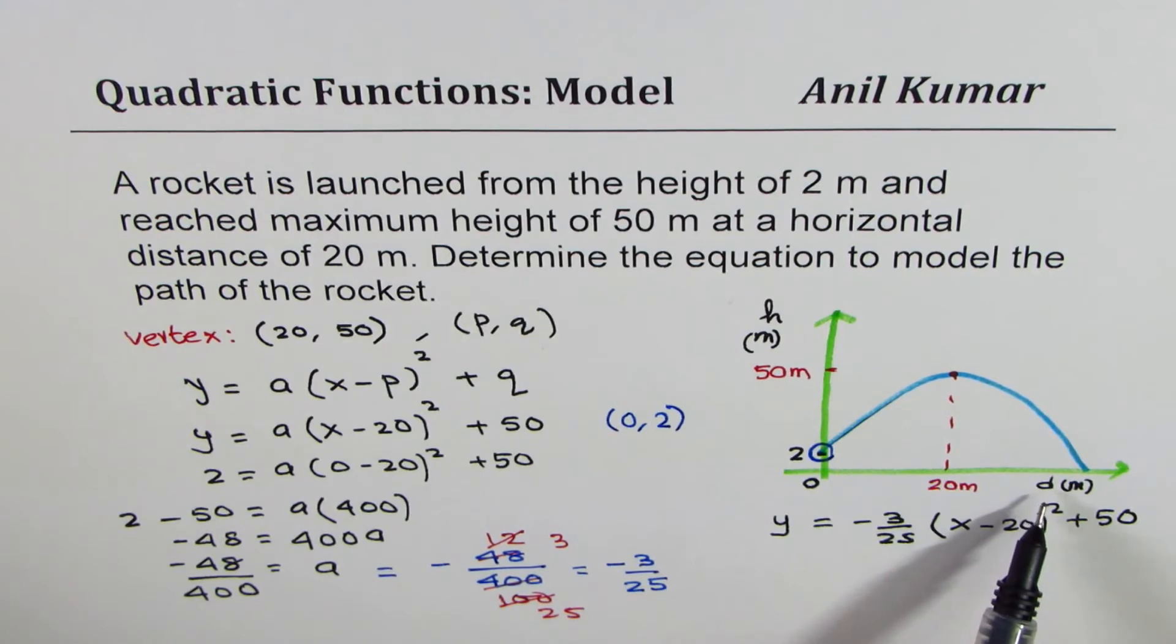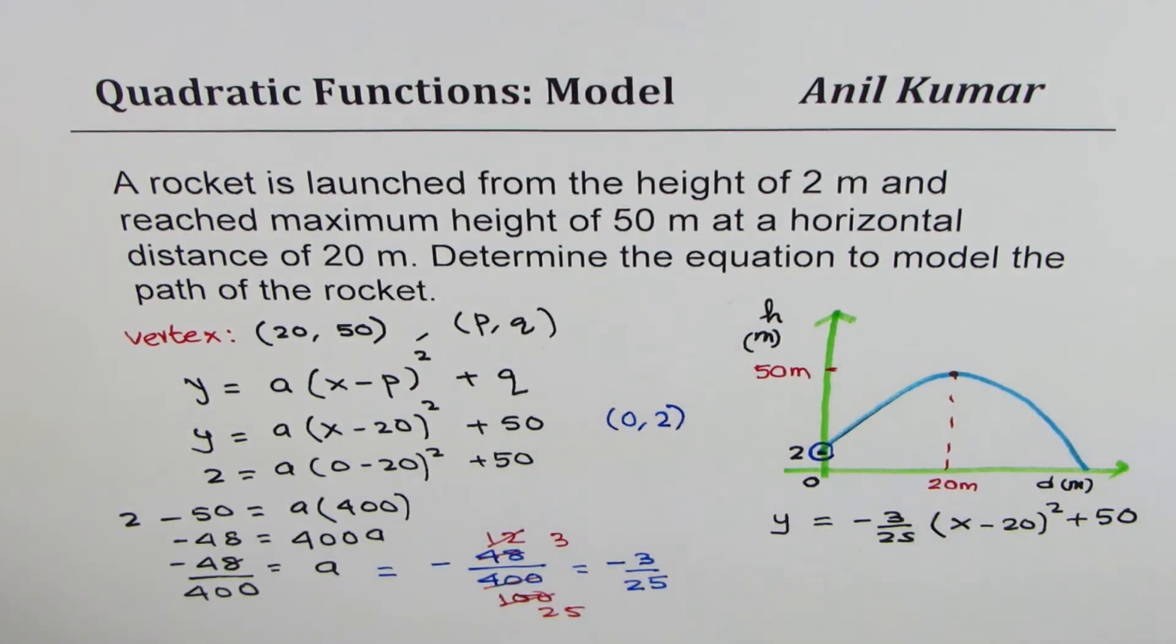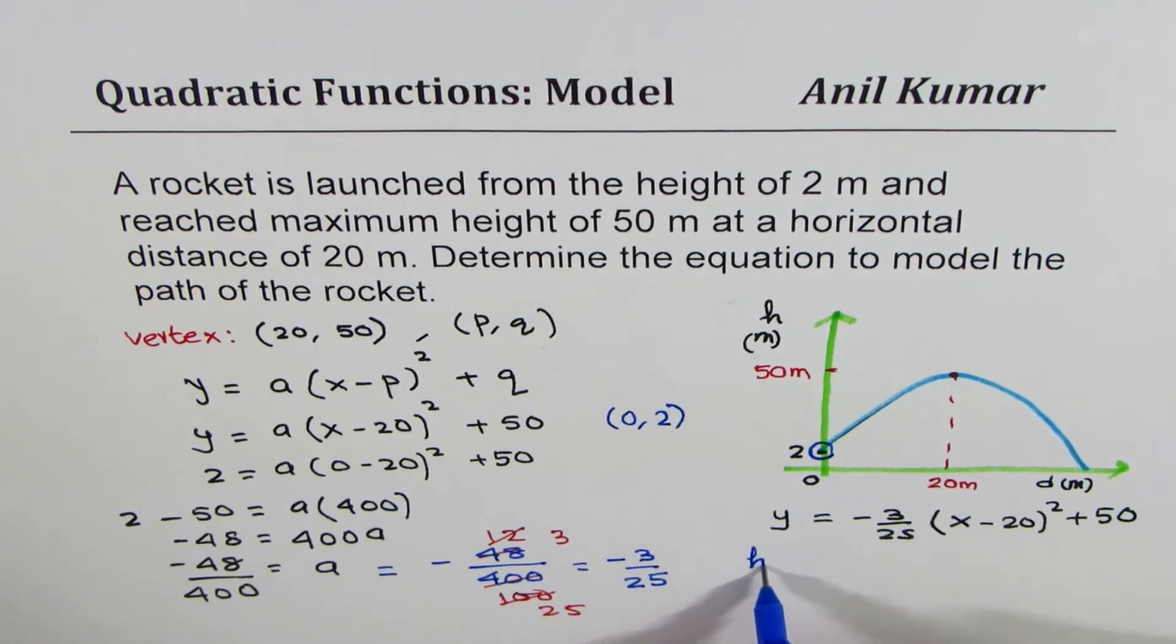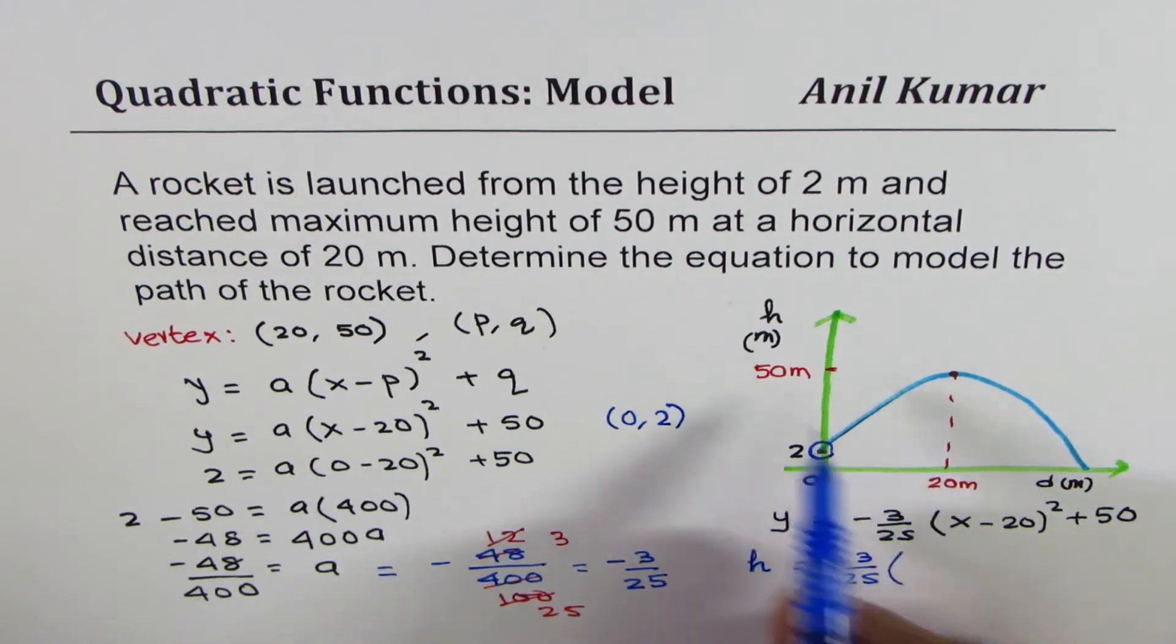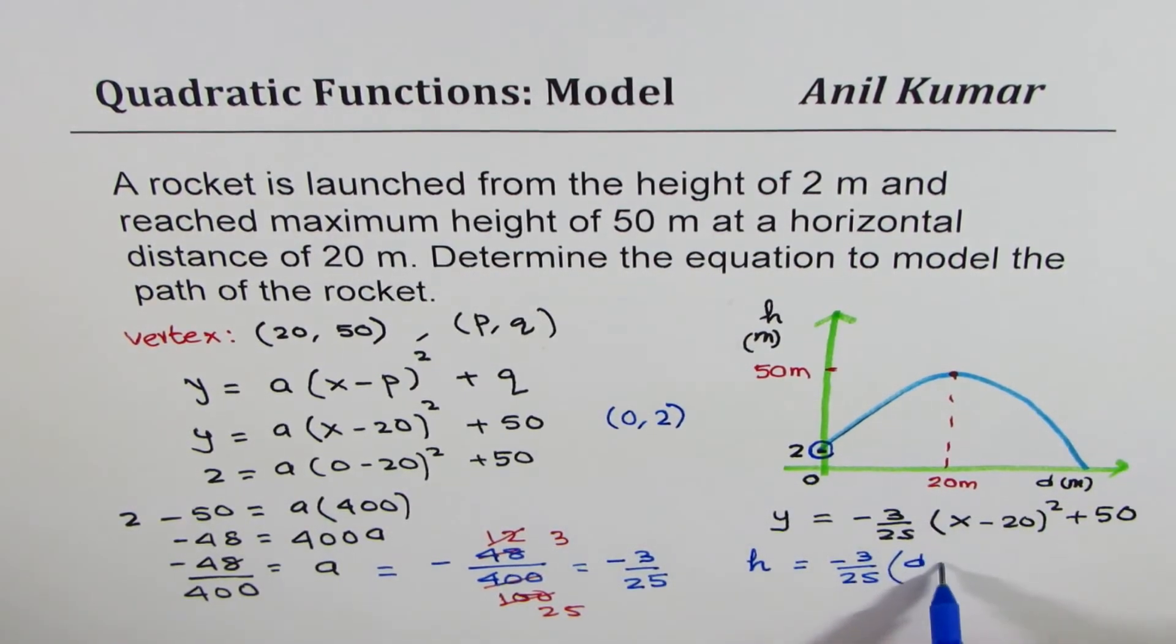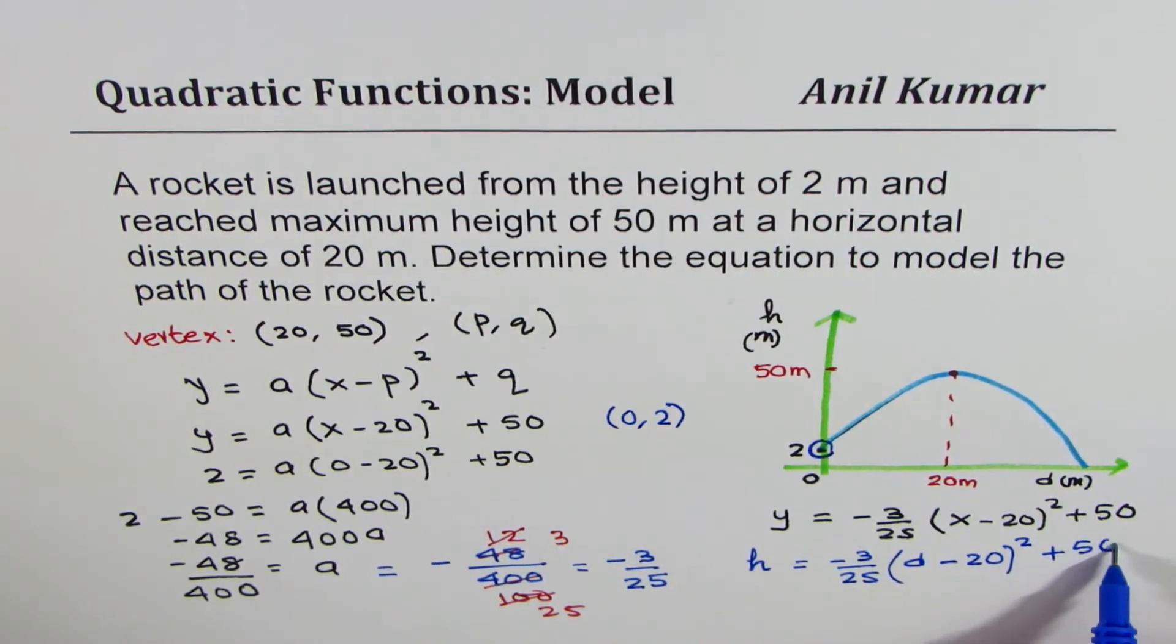So here, x should be replaced by d, and y should be replaced by h. So strictly speaking, I should write this as h equals to minus 3 over 25 times (d minus 20) whole square plus 50. Since I used d in my graph, I could have used x and y there.